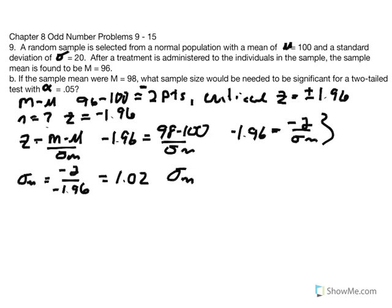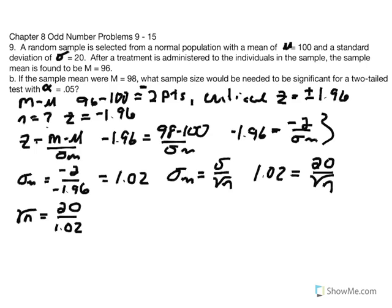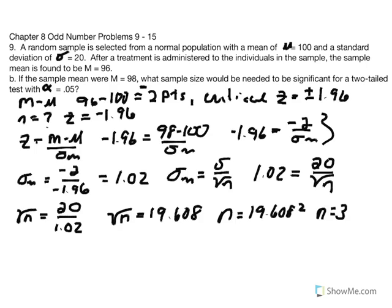Now using our standard error equation to solve for n: a standard error of 1.02 generates a z score of negative 1.96. Replacing variables: 1.02 equals 20 over the square root of n. Therefore the square root of n equals 20 over 1.02. Doing that calculation, the square root of n equals 19.608, and therefore n equals 19.608 squared, giving n equal to 384.47.